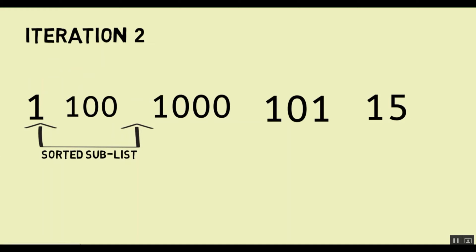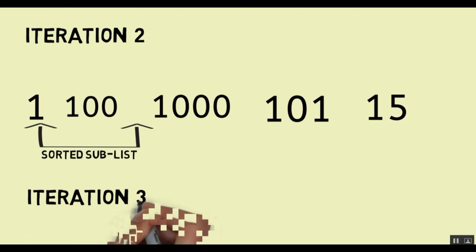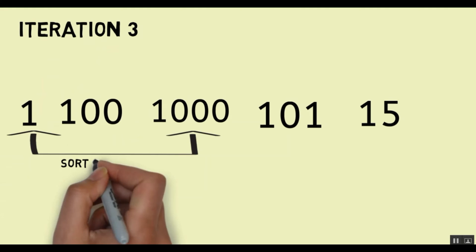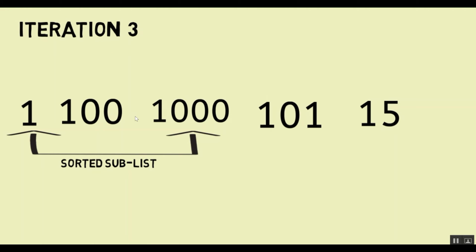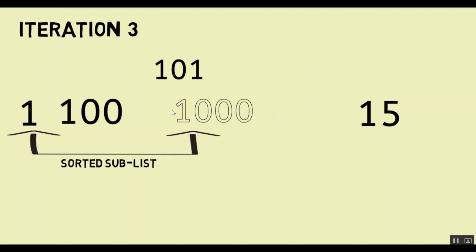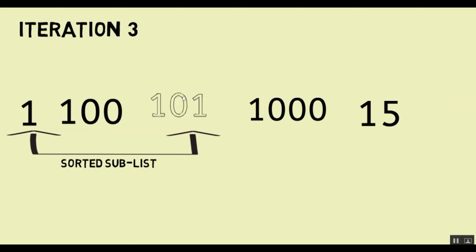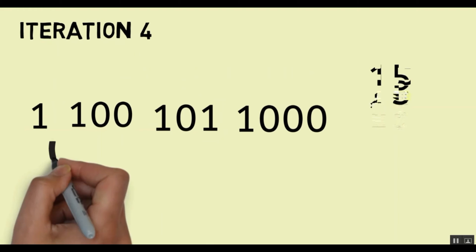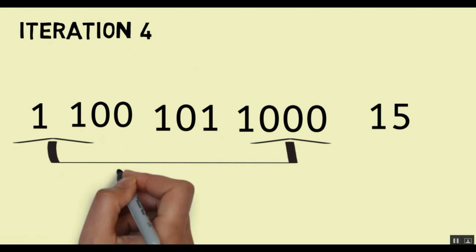So let's move forward to iteration 3. Our sorted sublist now consists of 1, 100 and 1000. At this point we have 3 elements sorted at the start of iteration 3 and 2 elements as unsorted. Now we pick the next element which is 101. Similar to iteration 2, 101 goes into the sorted sublist. It is compared to 1 — it is greater than 1. It is compared to 100 — it is greater than 100. But it is less than 1000, so 1000 again moves towards the right and 101 occupies its place.